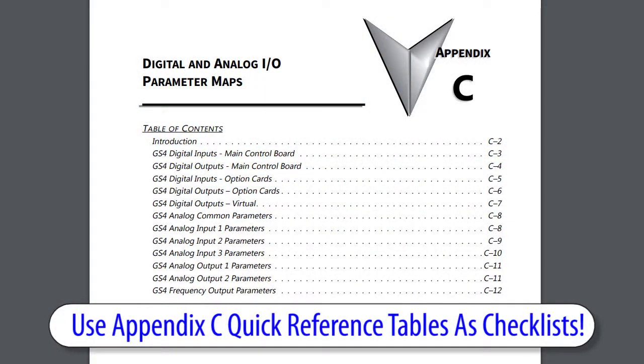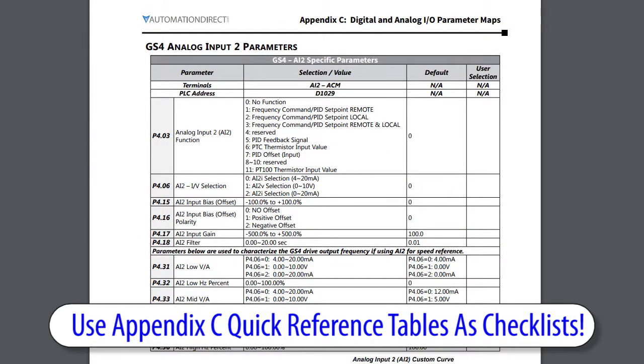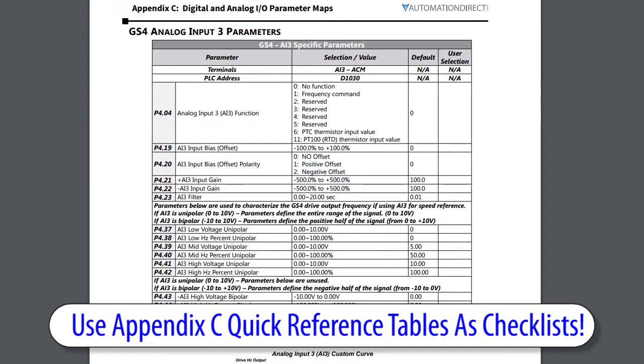Appendix C of the user manual has tables that list every parameter for each I/O in one simple, concise location. These are great to use as checklists to make sure you don't forget anything when you're setting the parameters.